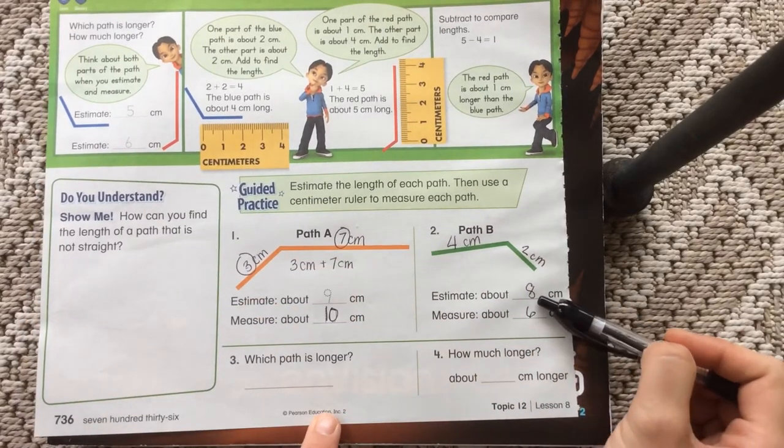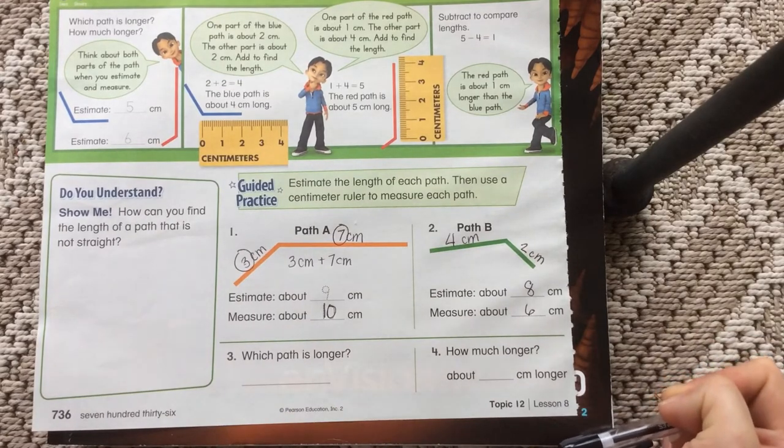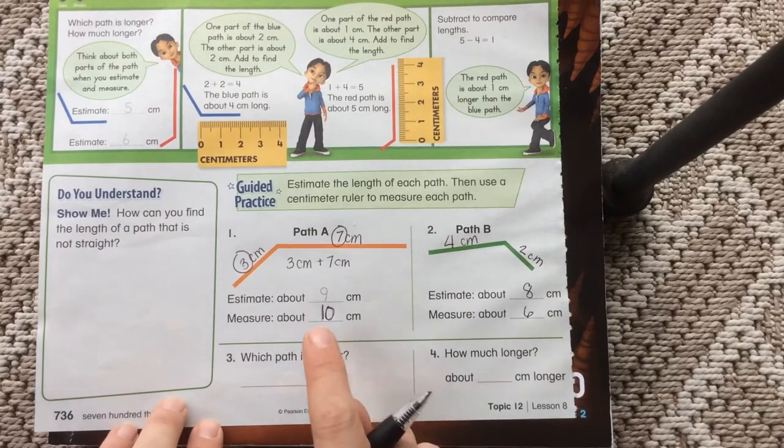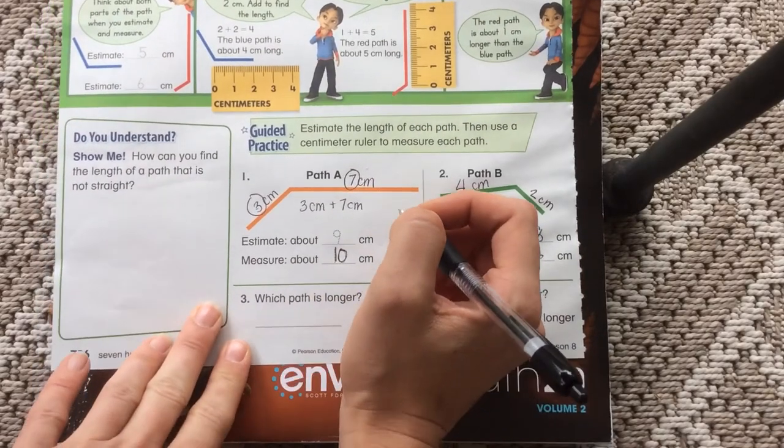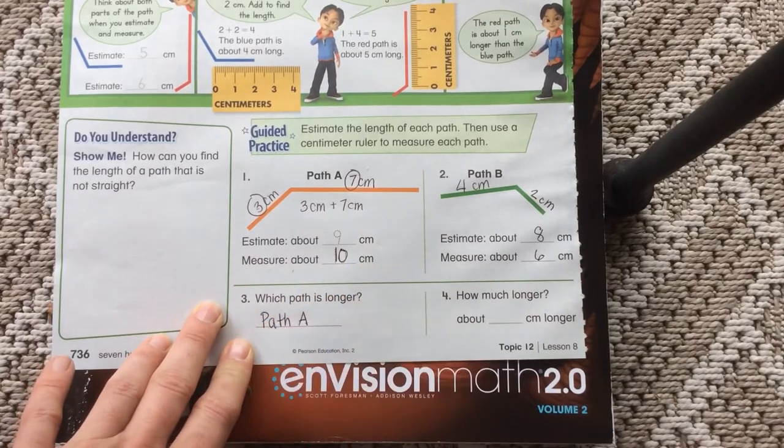So my estimate wasn't exact, but that's okay. And I don't need to erase and change it. It's okay if my estimations are different. So which path is longer? It's pretty obvious that path A is longer. I could even see that with my eyes. But now that I've measured, I know that it is longer.